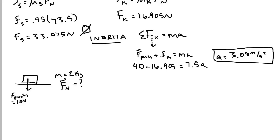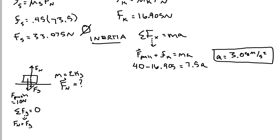The free body diagram shows a push force down, a force due to gravity down, and a normal force up. There are no forces in the x direction, and since you're only pushing down, the object is not accelerating. So the sum of my forces in the y direction equals zero: normal force plus force due to gravity plus force push all equal zero.